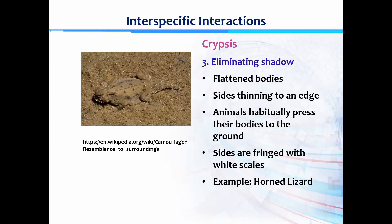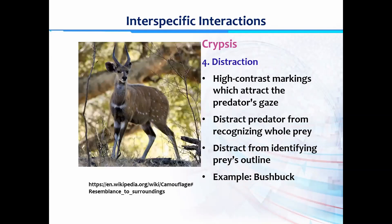The third adaptation in crypsis is eliminating the shadow. Shadow is one thing that helps predators identify the presence of their prey, so if the shadow is eliminated it helps the animal protect itself. For example, the horned lizard has a flat body with thin sides and white markings, making it look like a flat sheet on the ground. With these flat bodies they eliminate their shadow, protecting themselves against predators.